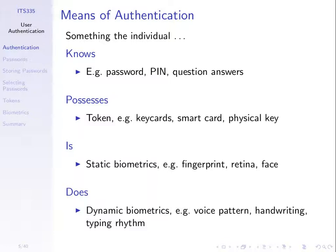Second: something they possess — tokens. A physical key, key card, swipe card, or smart card — which is a key card with an embedded processor and memory. Physical keys act as tokens. USB drives can also be configured so that possession of the drive acts as evidence that you're the person allowed to access the system.